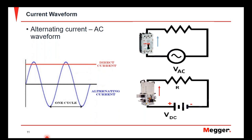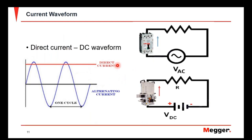Another thing to consider is the waveform used when doing primary current injection tests, because different circuit breakers require different waveforms, and we have different instruments that provide different outputs to satisfy these requirements. Typically for an AC waveform we use an AC current source for a standard molded-case circuit breaker, but we also use a DC waveform for certain types such as high-speed DC circuit breakers used in railway infrastructure or DC vehicular applications.